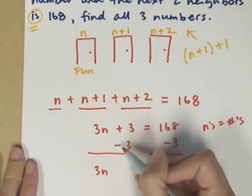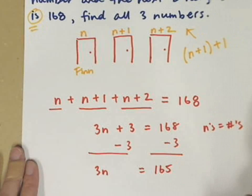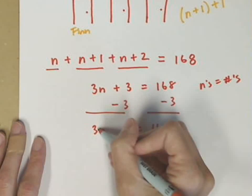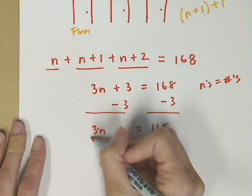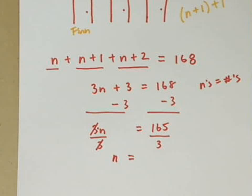And I get 3N, 3 minus 3 is 0. And over here, I get 168 minus 3, which is 165. And I end up with that same last step in the equation that I had in the last example. This is 3 times N. So I divide by 3, divided by 3. So I've got my N equals 165 divided by 3. And I get 55.